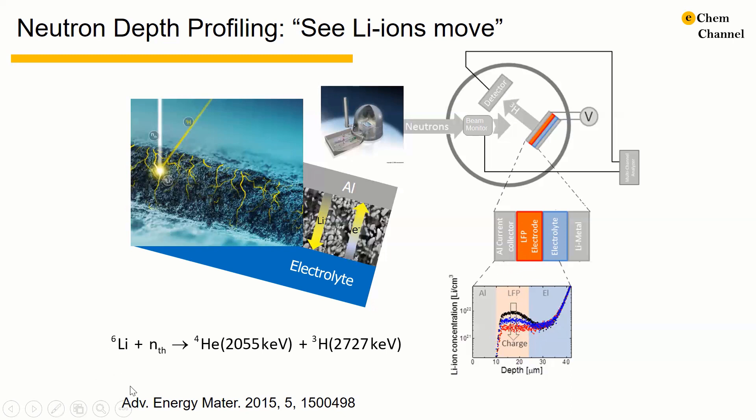When lithium-6 captures a neutron, it will release a helium nuclei and a tritium. Both elements have very high kinetic energy, especially the tritium can easily leave the electrode and the cell. After the tritium leaves the electrode, the detector can measure the kinetic energy of the tritium.